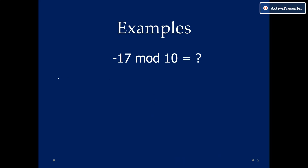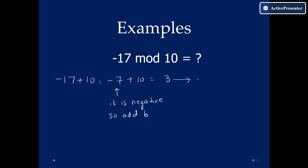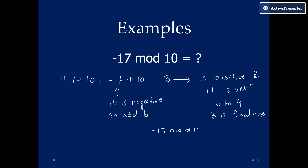Let us try minus 17 mod 10. Take minus 17 and add B, which is 10 — you get minus 7, which is still negative. Add 10 again: minus 7 plus 10 equals 3. Since 3 is positive and it is between 0 to 9, 3 is the final answer. So minus 17 mod 10 equals 3.